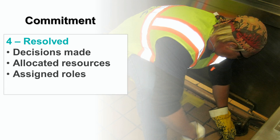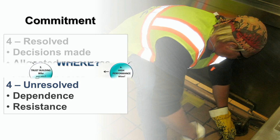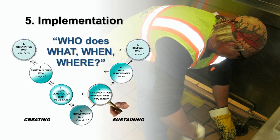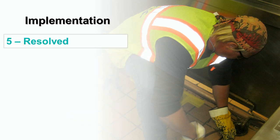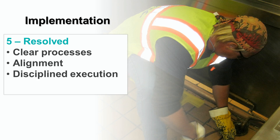When commitment challenges are unresolved, you will see dependence and resistance. Step 5: Implementation. Teams turn the corner when they begin to implement work and settle on who does what, when, and where. Timing and schedule dominate this stage. It is about the unfolding of the work and having the planning, scheduling, and monitoring processes in place to keep things running on track. When implementation challenges are resolved, you will see clear processes, alignment, and disciplined execution.